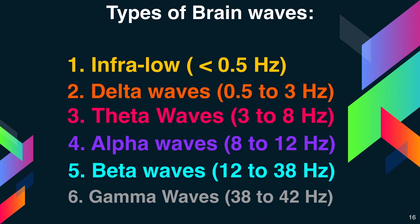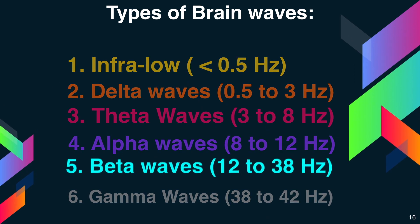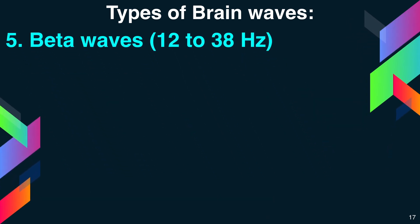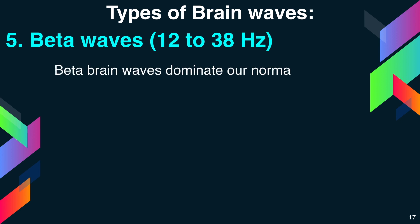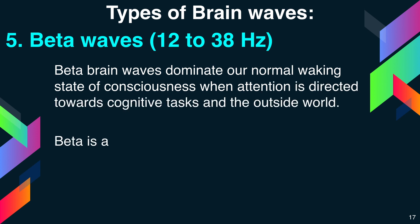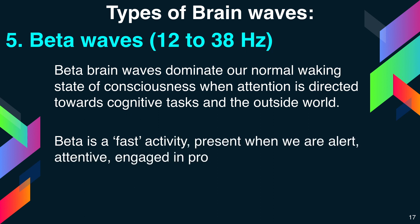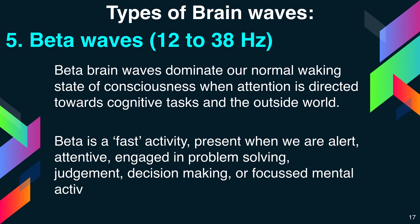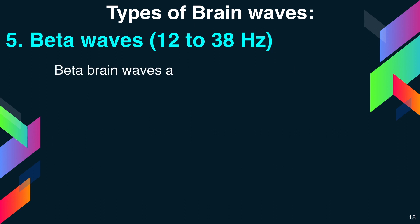The next type of waves is beta waves, between 12 to 38 hertz. Beta brain waves dominate our normal waking state of consciousness when attention is directed towards cognitive tasks and the outside world. Beta is the fast activity present when we are alert, attentive, engaged in problem-solving, judgment, decision-making and focused mental activity. Beta brain waves are further divided into three bands.